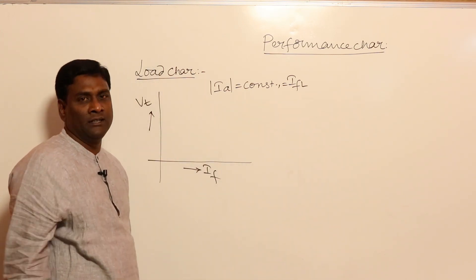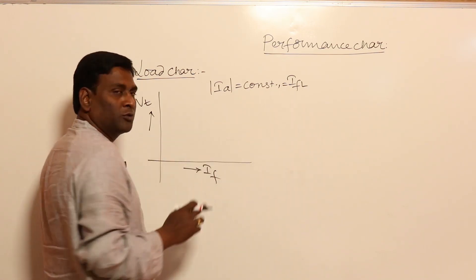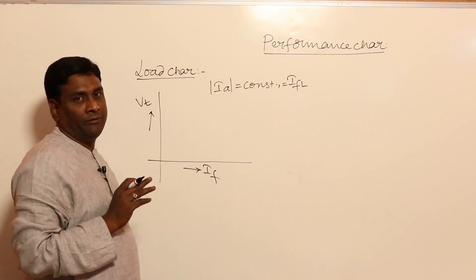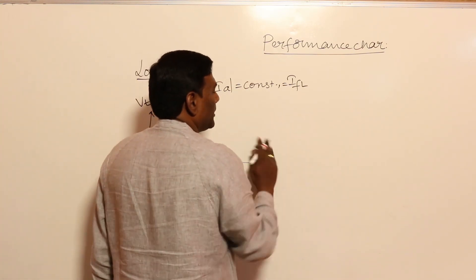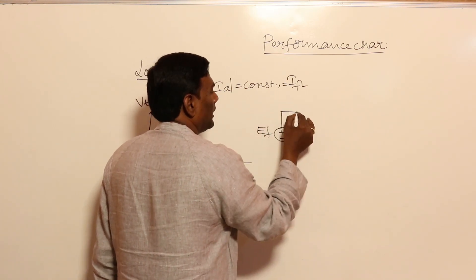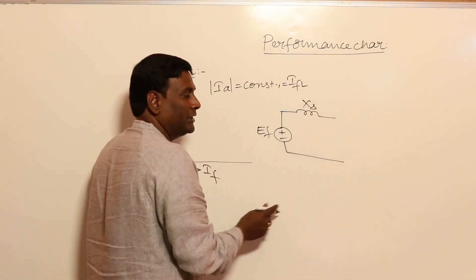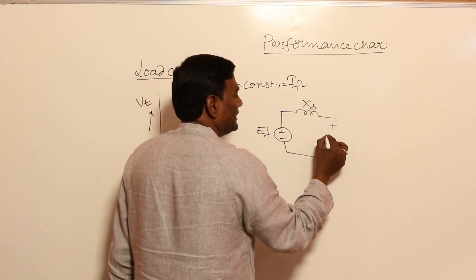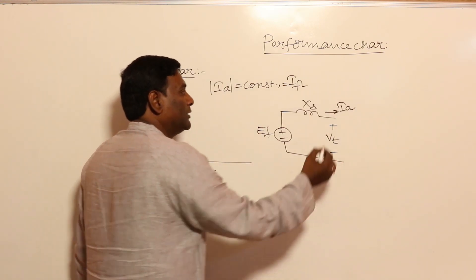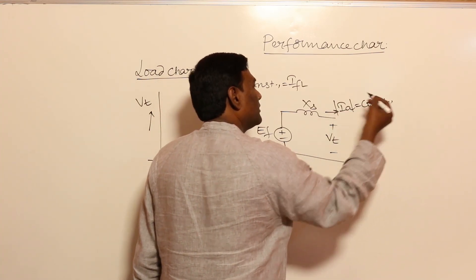All characteristics are drawn with respect to full load only, and voltage regulation is calculated with respect to full load. If IA equals IFL is constant, how does terminal voltage vary with field current IF? The magnitude of IA is constant, but the power factor can vary.